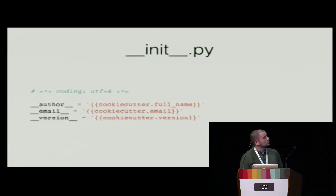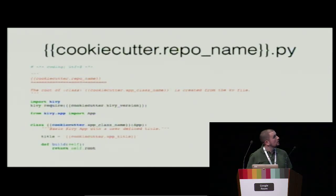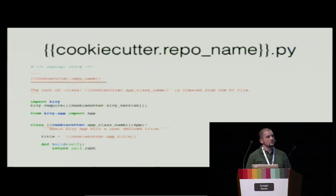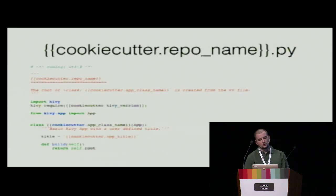Inside my __init__.py I include meta information about my package: a full name, an email, and the version. Next, in the application module itself, Kivy requires you to specify the version of Kivy you are using at the very beginning — it's a safety switch so that if you're using a very old version and try to use features not yet available, it will raise a proper exception. Then we inherit from App and simply set up the title, and the build method will automatically detect the Kivy language file and return whatever is inside there.